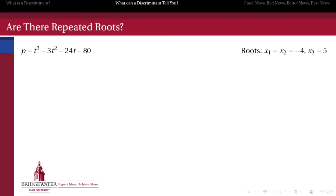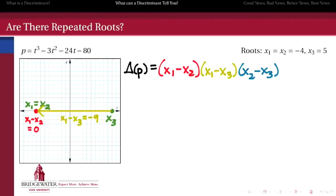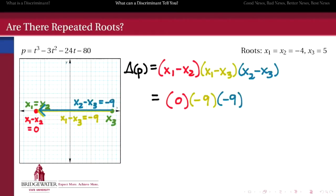Starting with repeated roots, here's a cubic that has two roots that are the same, negative 4, and a third root at 5. If we compute its discriminant, the first thing we have to do is subtract those roots pairwise. But when I subtract the pair of roots that are the same from one another, I'm going to get a zero. So when I multiply all the pairwise differences together, one of those factors is equal to zero, and that gives us a zero discriminant.